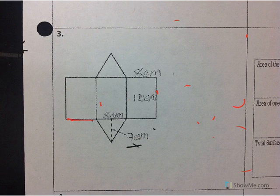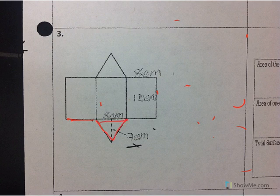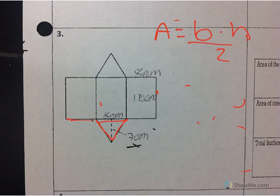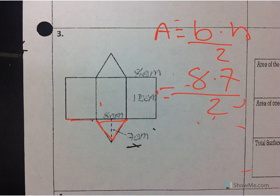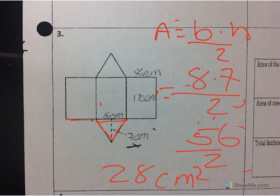Not sure if this one went through or not, so I'm going to try it again. I have my triangle, which is A equals base times height divided by 2. My base is 8, my height is 7, divided by 2. I get 56 divided by 2, which is 28 centimeters squared.